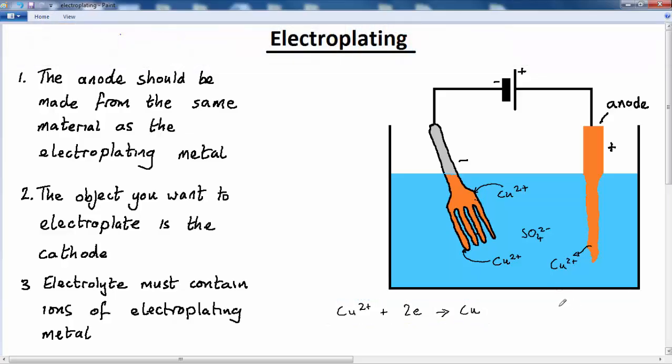While at the anode, the copper atoms are losing two electrons and forming copper ions, which then replace the copper ions which are being reduced at the cathode.